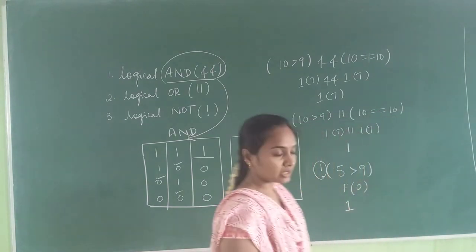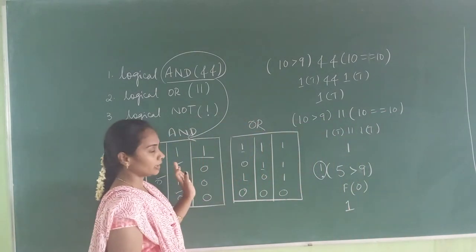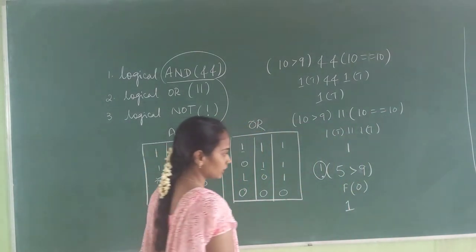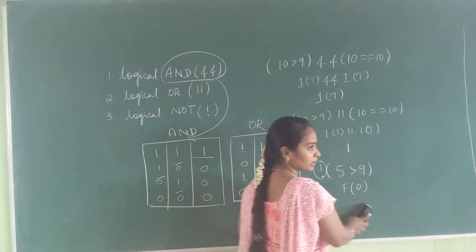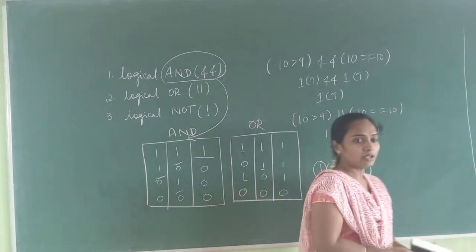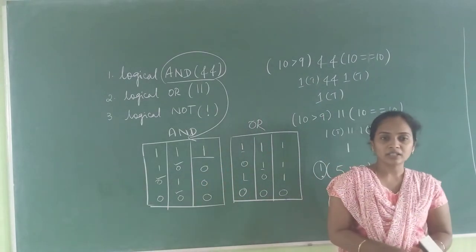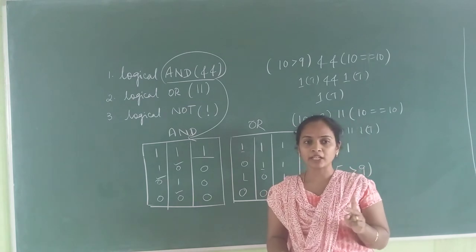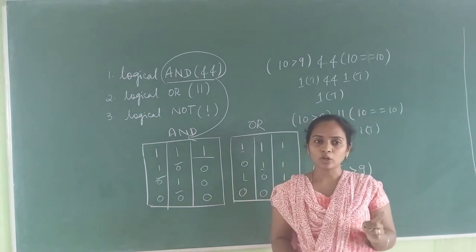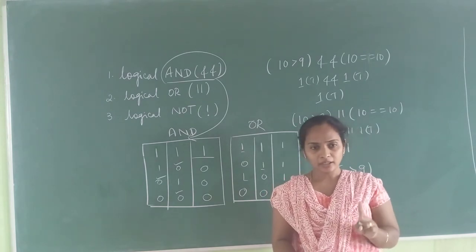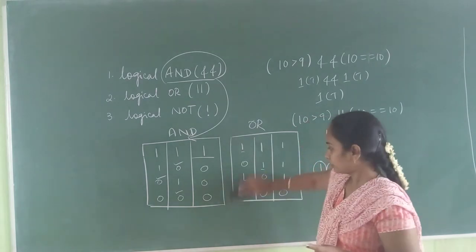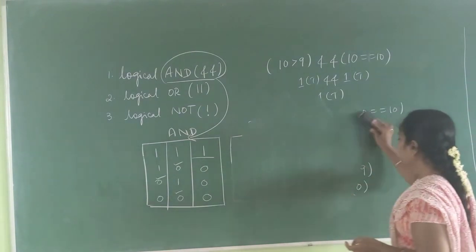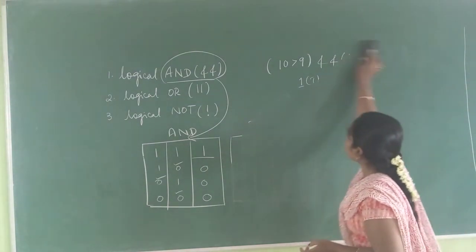So AND, OR, and NOT are the logical operators. I also explained unary operators, where unary operators act on a single variable — they have two types: increment operator and decrement operator. Next, we have something called the shorthand operator.